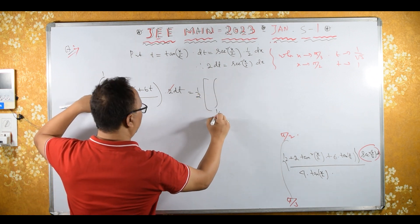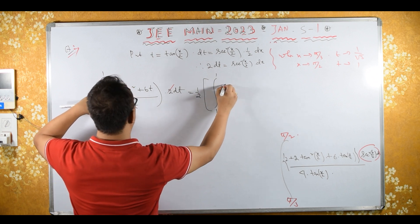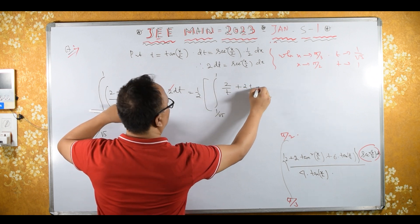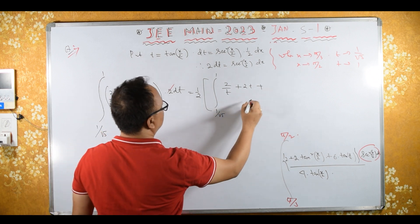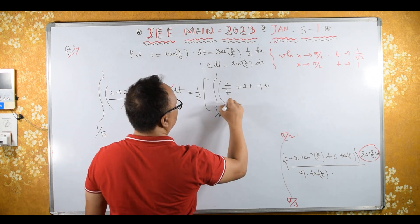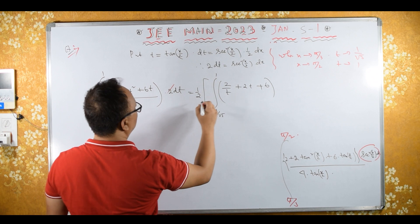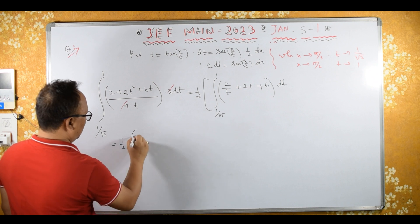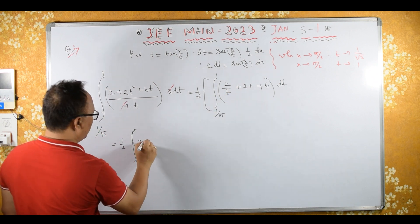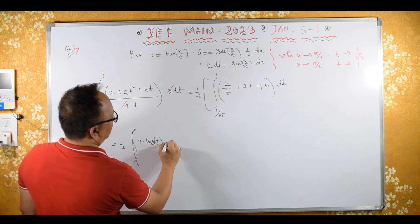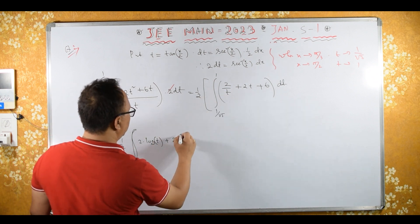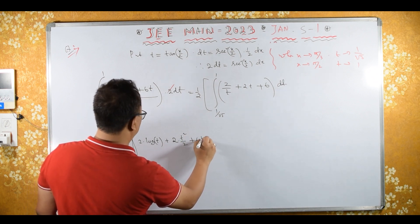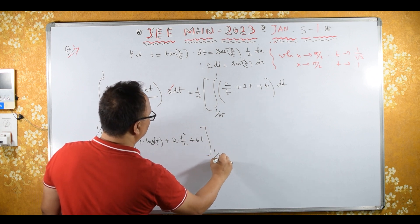This gives half times the integral from 1/√3 to 1 of: 2/t plus 2t plus 6, dt. Now performing the integration, this equals half times: 2 log t plus t²/2 plus 6t, with limits from 1/√3 to 1.